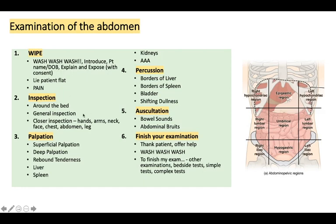As with all examinations, start with inspection. Begin around the bed — look for any equipment that might give you signs to figure out what pathology they might have. Then do a general inspection: are they alert, awake, in pain? Are they sitting or were they sleeping when you came in? After that, move to a closer inspection with a system: start with hands, then arms, neck, face, chest, abdomen, and then peripherally at the legs and back.